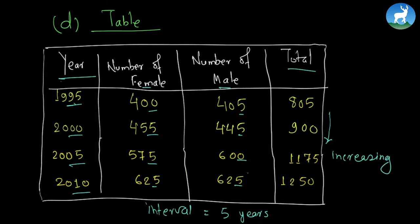Here we have 400, then we have 455, suddenly we have 575 and finally we have 625. Same is the case with the number of females and males — it goes on increasing. The total is also increasing.